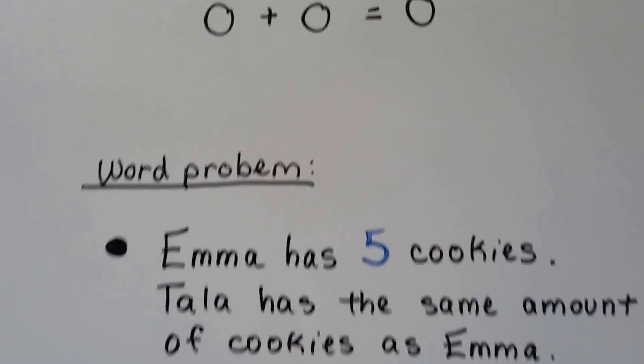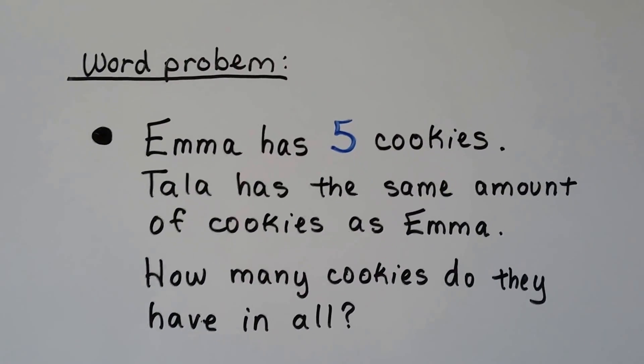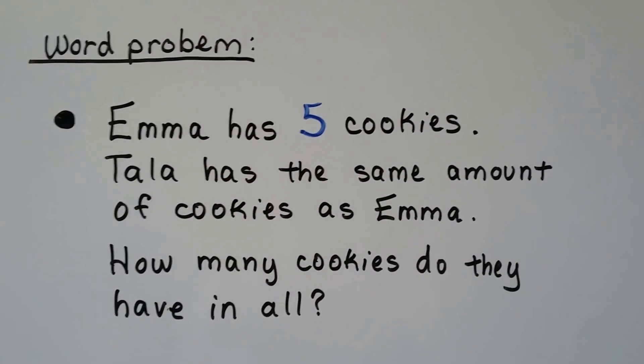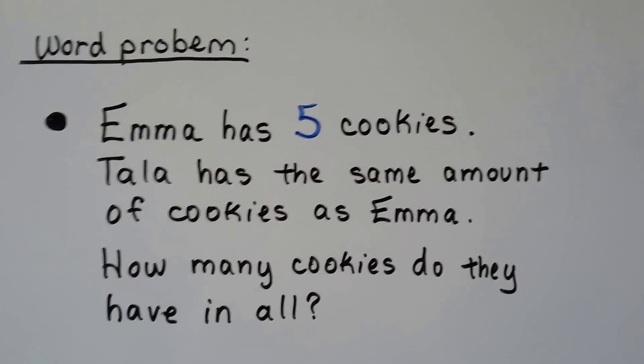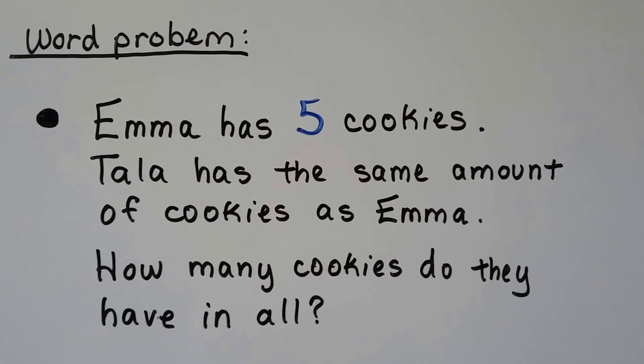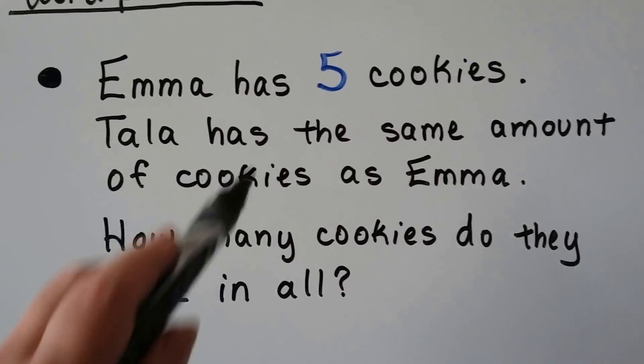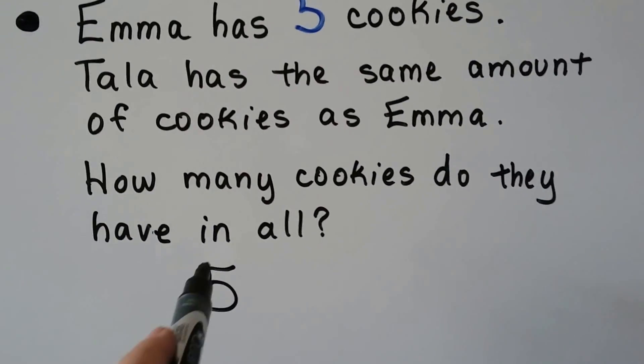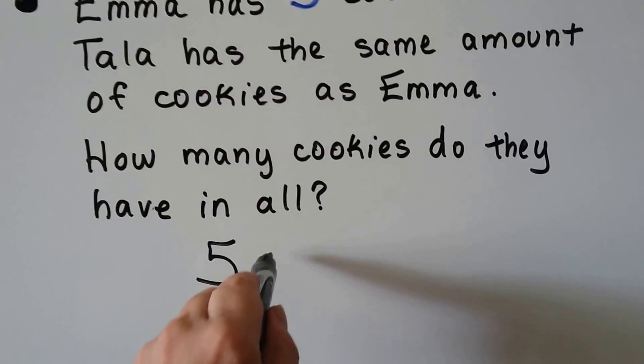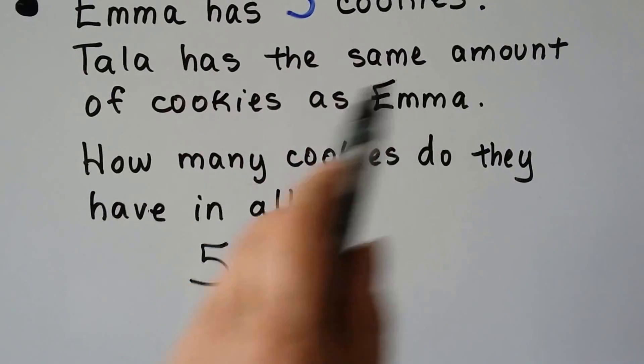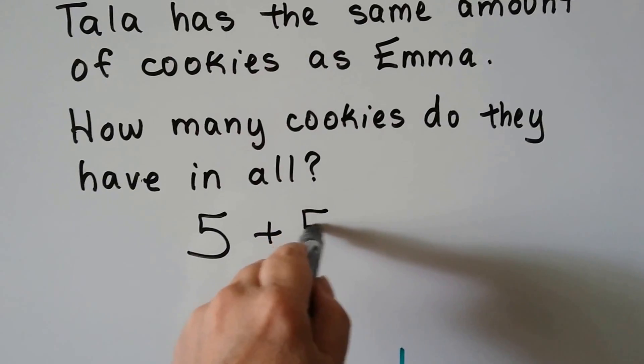We can do a word problem with doubles. Emma has five cookies and Tala has the same amount of cookies as Emma. So how many cookies do they have in all? Well, we know that Emma has five cookies. It says in all, so that means we're going to add. And it says that Tala has the same amount of cookies as Emma, so she must have five.